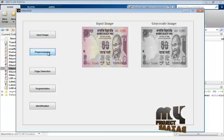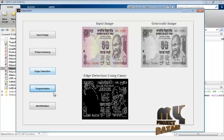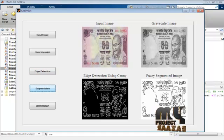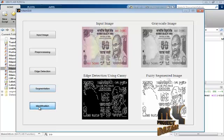Click the preprocessing button. Here converting RGB image into gray image. Then edge detection - canny edge operator is used. Then segmentation is done using fuzzy segmentation. Next is identification.